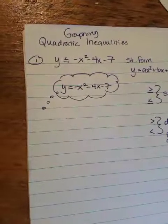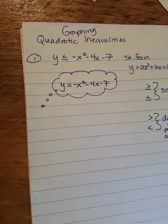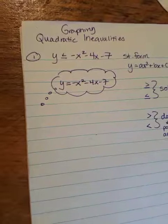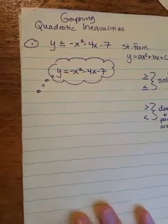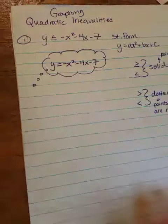So you're going to think of this as, okay, well, how do I just graph the parabola negative x squared minus 4x minus 7? And in a minute, we'll get to the inequality piece.